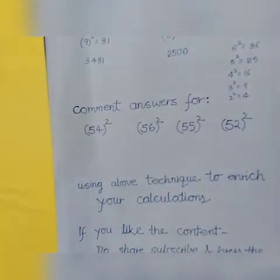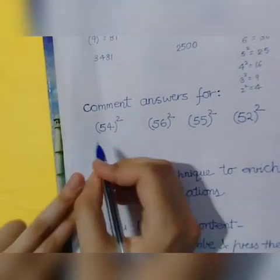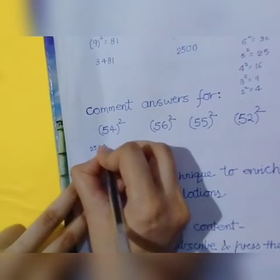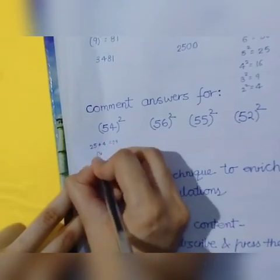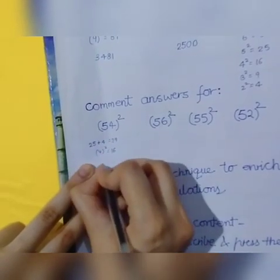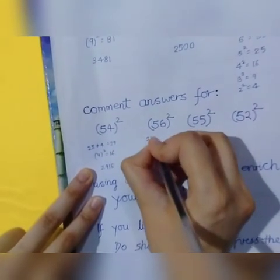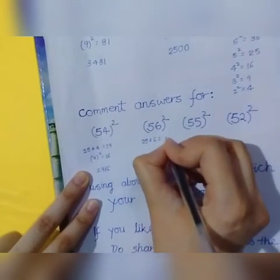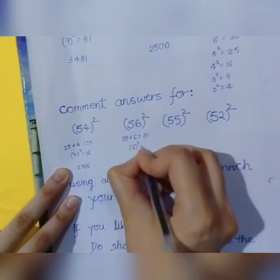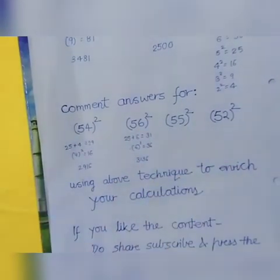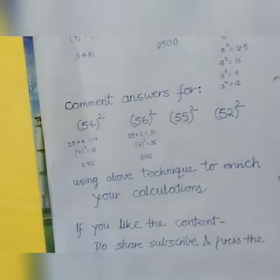Now let's see these questions. Look, like 54 whole square, I will show you. 25 plus 4 is 29. 4 whole square is 16. Combine the result: 2916. Here we do 25 plus 6, we get 31. Then 6 whole square is 36. Combine the result: 3136.